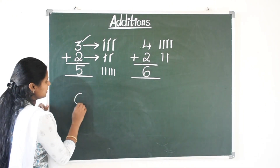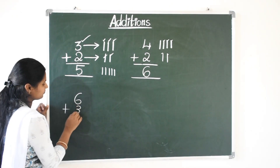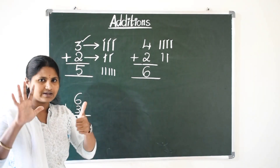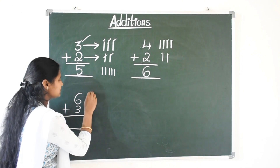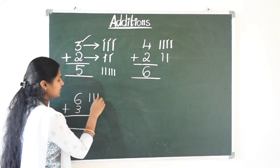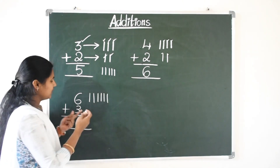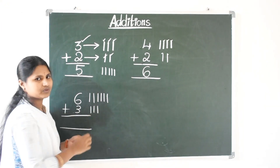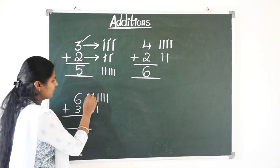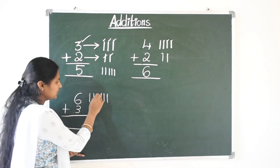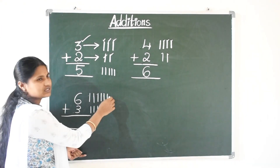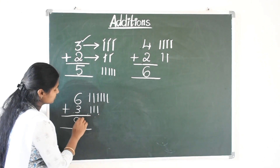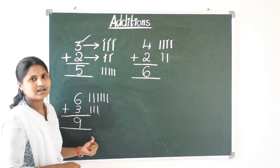Now see six plus three. Six means open your six fingers. Six fingers means we can draw six lines: one, two, three, four, five, six. And three means three more lines: one, two, three. Now count all lines: one, two, three, four, five, six, seven, eight and nine. So six plus three is nine.